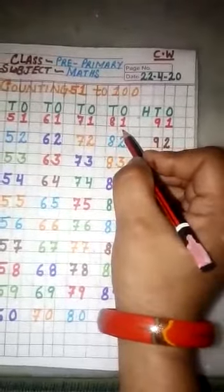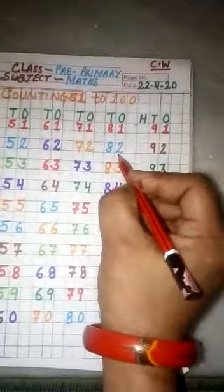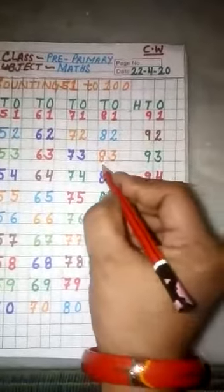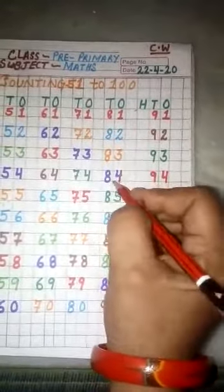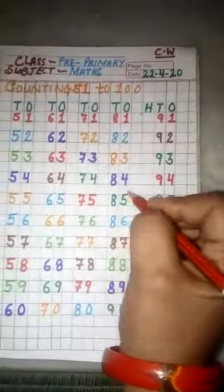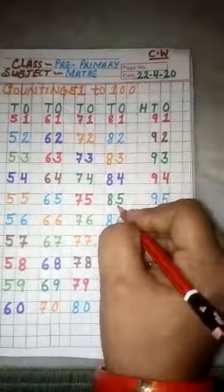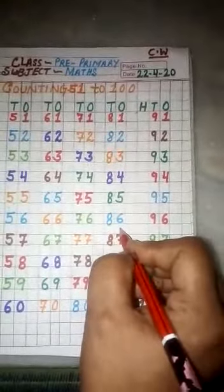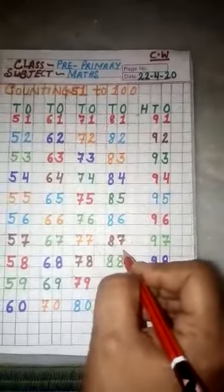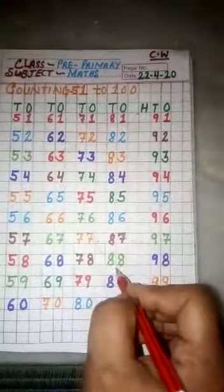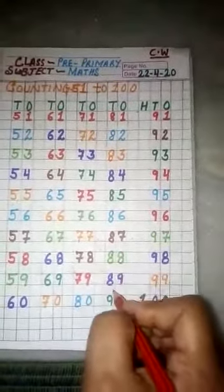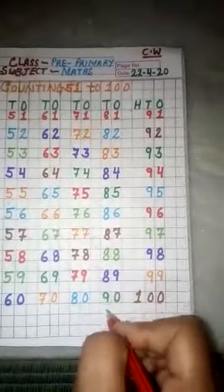81, 81, 82, 82, 83, 83, 84, 84, 85, 85, 86, 86, 87, 87, 88, 88, 89, 89, 90.